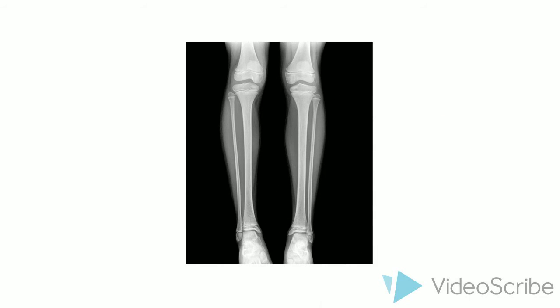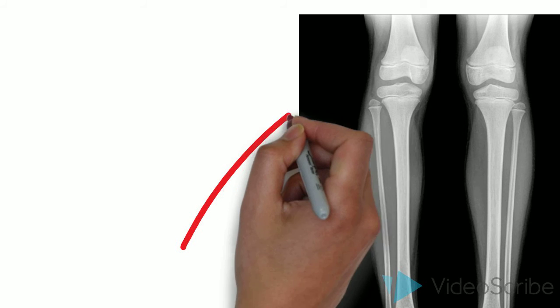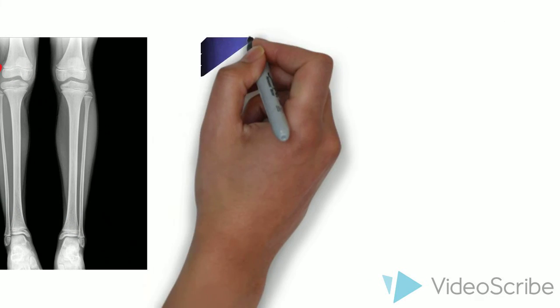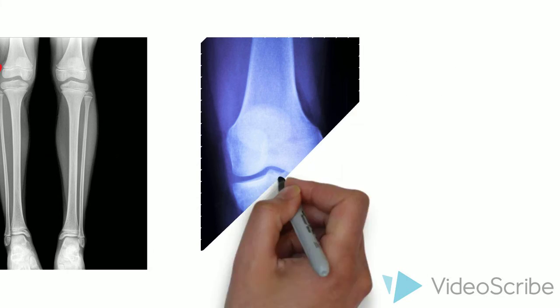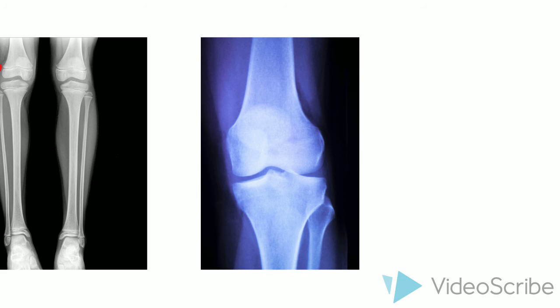Look at the gaps where the growth plates are. These can be damaged by heavy lifting, so they need to be protected. An adult's bones are much stronger because the growth plates have fused.